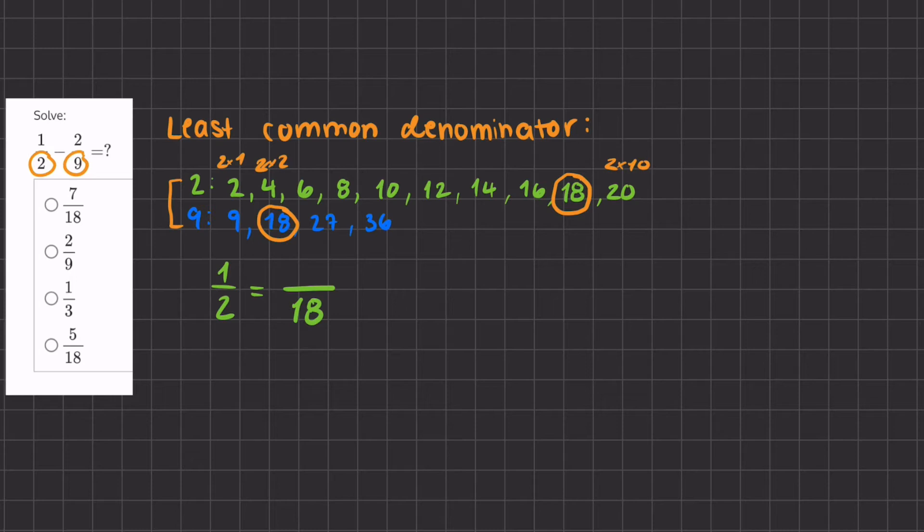Now when we take 2 and we turn it into 18, we've multiplied it by 9. Now if I multiply the denominator by 9, I'll also have to multiply the numerator by 9, giving me 9 over 18.